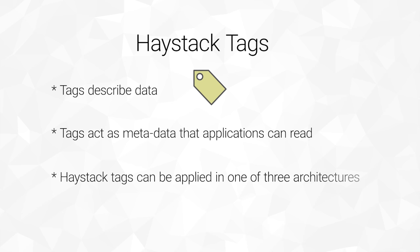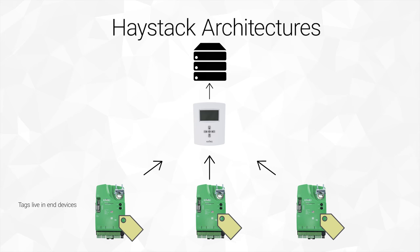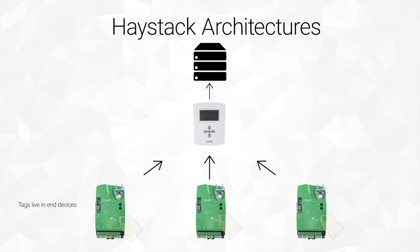Tags can be applied in one of three architectural levels. The first level is the device level, where you add tags to devices being used, such as VAV controllers. The second level would be to have tags live in a global controller — the devices that supervise edge devices. The final level would be to have tags applied at the server level, where all the data comes up from the lower levels and ultimately resides.